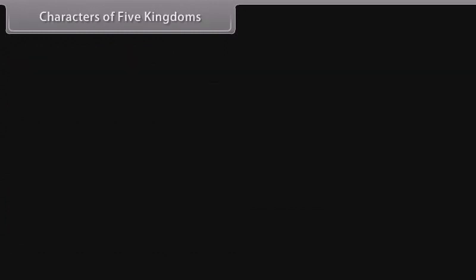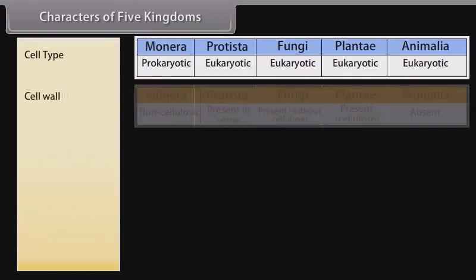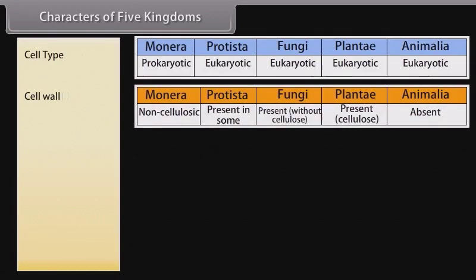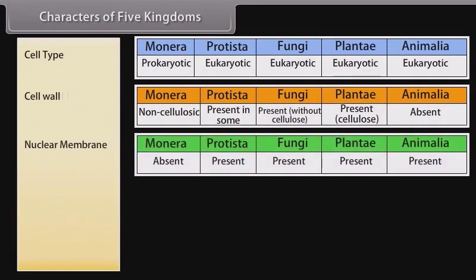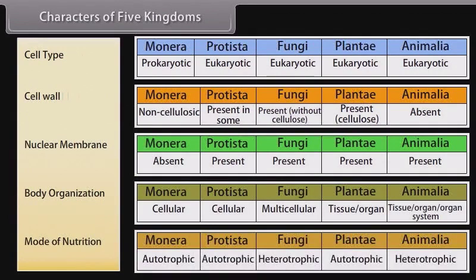The characters used to distinguish the five kingdoms are: cell type, cell wall, nuclear membrane, body organization, and mode of nutrition.